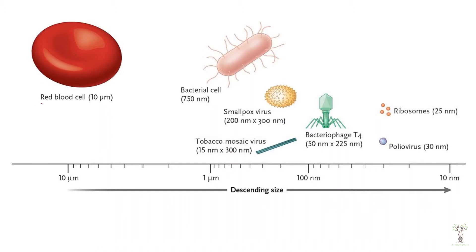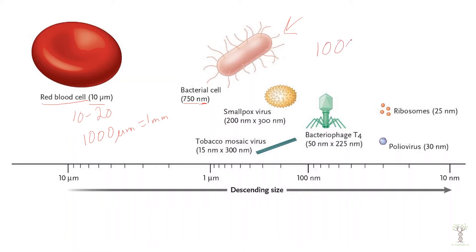If we look at this diagram, we can see a red blood cell is about 10 micrometers. Human cells can be anywhere from 10 to 20 micrometers on average. The largest human cell, which is an egg cell, is 100 micrometers. There are 1000 micrometers in one millimeter. A bacterial cell can be less than one micrometer and some can be two to five micrometers. This diagram is showing a very small one at 750 nanometers. There are 1000 nanometers in one micrometer, so these are extremely small.